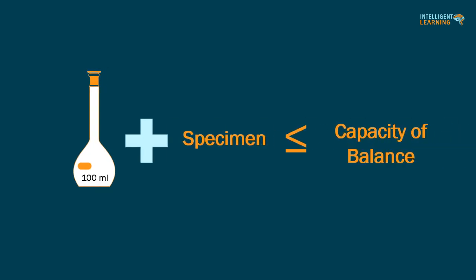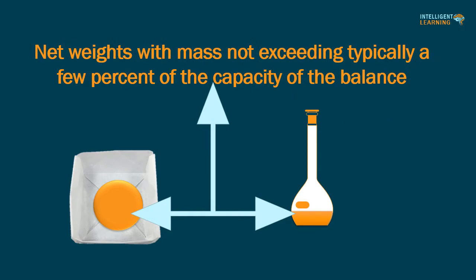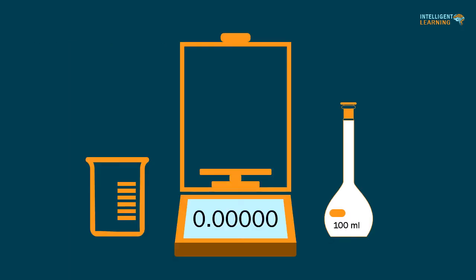Total weight of the receiver plus the specimen must be less than the capacity of the balance. A properly maintained and adjusted laboratory balance has weighing uncertainty for small masses. Net weights with mass not exceeding typically a few percent of the capacity of the balance are essentially determined by the repeatability. Repeatability depends on the size and surface area of the weighed object.